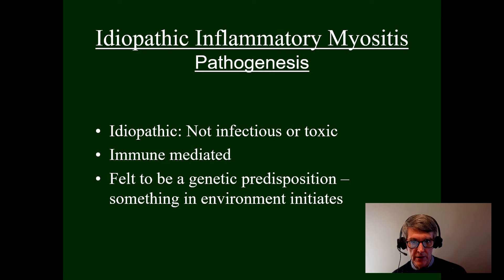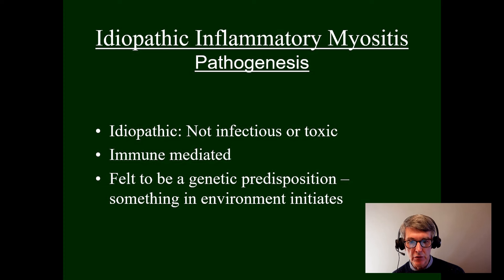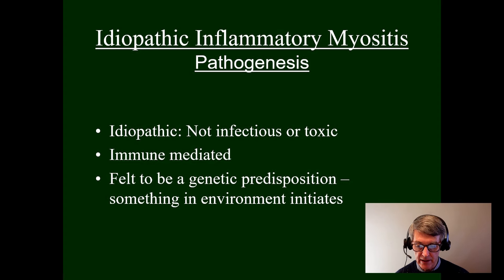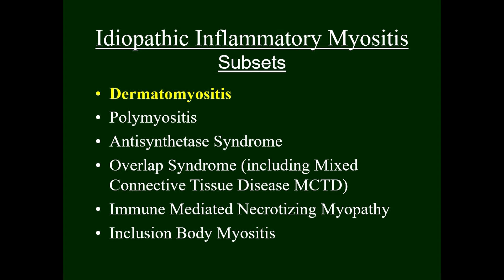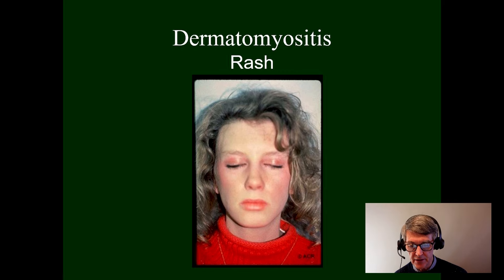As with most diseases we discuss in rheumatology, these are felt to be immune mediated with a genetic predisposition and then something in the environment that sets it off. I will discuss each specific entity and then lump them together to discuss the approach to diagnosis and therapy. Starting with probably the most common, dermatomyositis is inflammatory muscle disease associated with a characteristic rash.